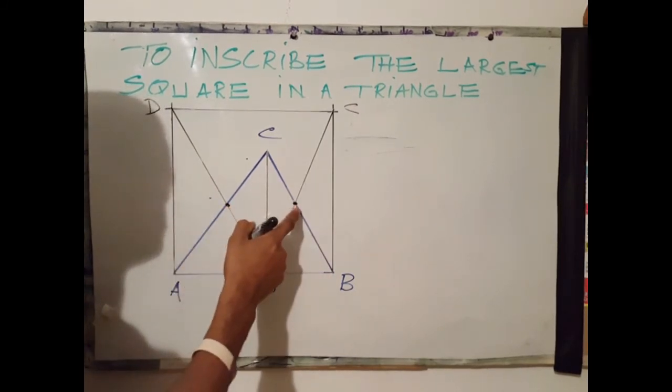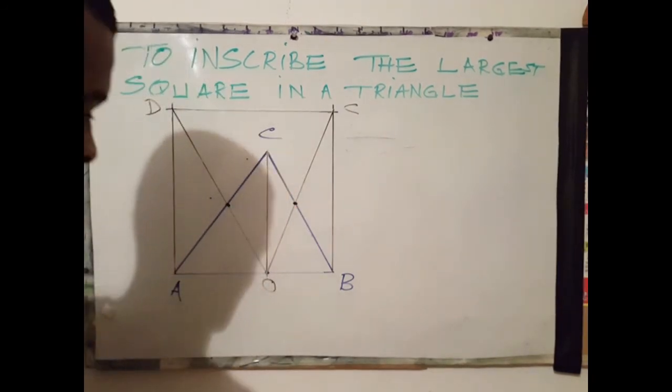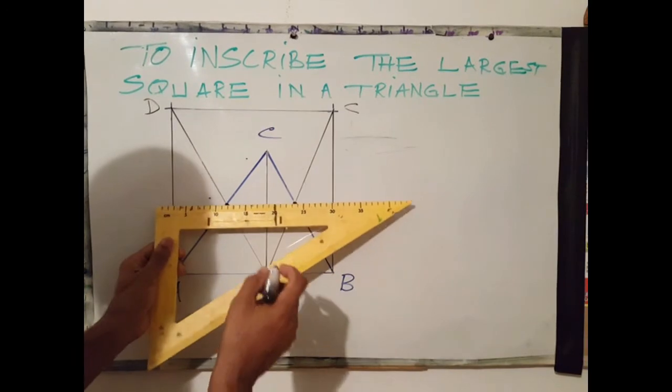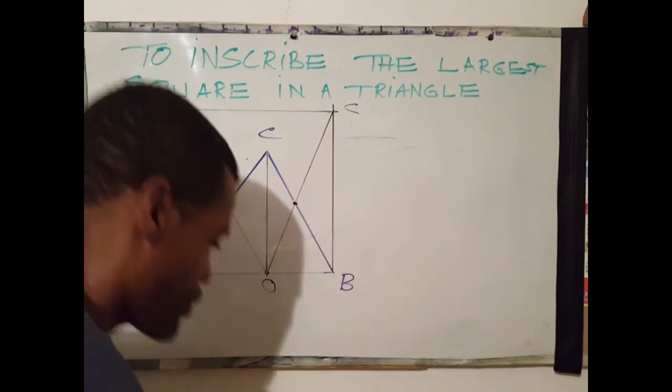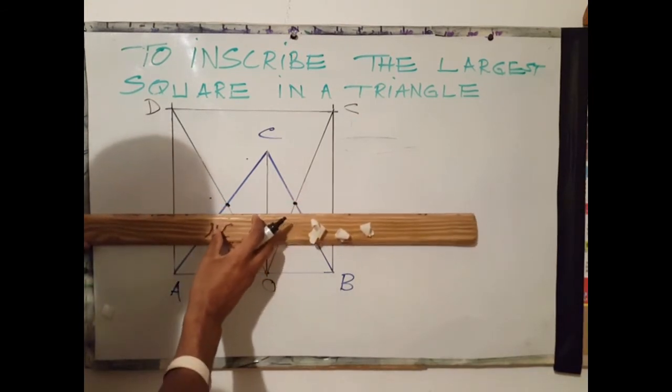This is the distance of one of the sides for the inscribed square. You may use your set square to join both points, or you may want to use your T-square. I choose to use my T-square.